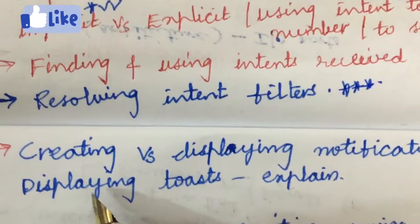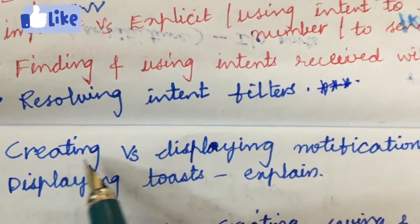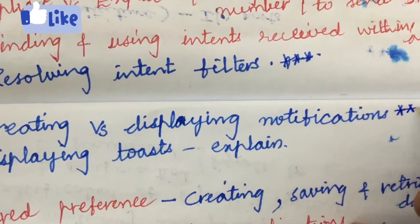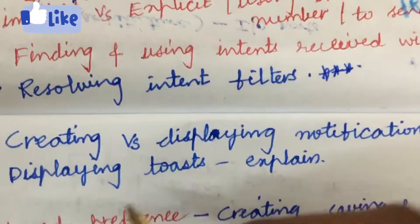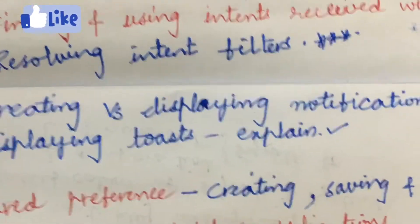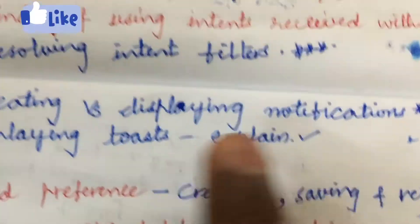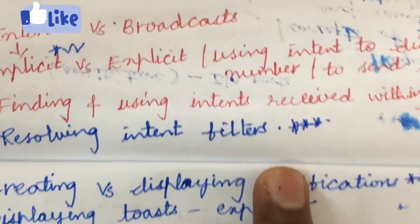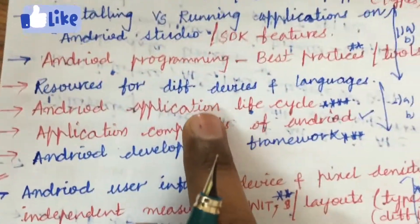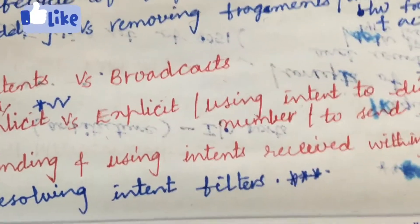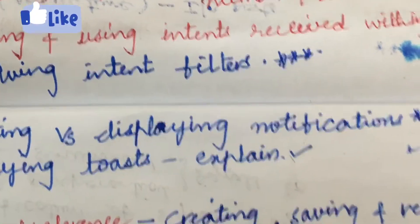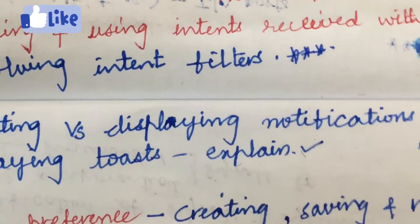What are the differences between creating and displaying notifications may be one of the gunshot questions, and displaying toast — explaining that may be a 7-mark question. This is the part from which you are going to get 30 marks, along with 30 marks from another section. Till here I have covered the 90-mark paper.